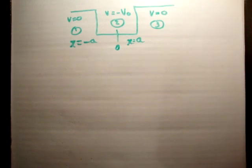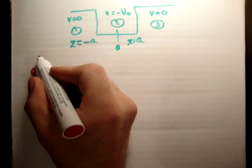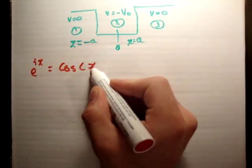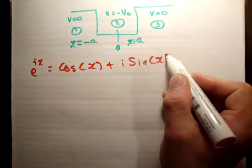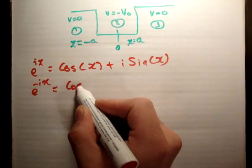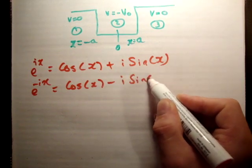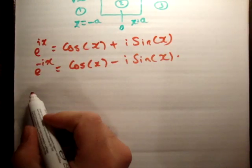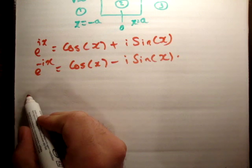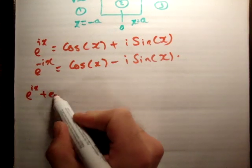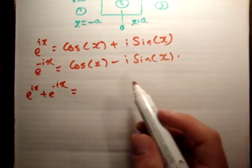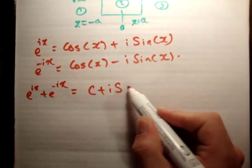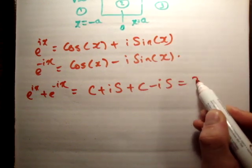The next thing I'd like to do is very quickly show you something which I feel a lot of people don't fully understand. First of all, Euler's equation says e to the ix is equal to cos x plus i times the sine of x, and similarly e to the negative ix is equal to cos x minus i times the sine of x. So what happens if we were to add both of these — we get cos x + i·sin x + cos x − i·sin x, and that's going to be equal to 2 times the cosine.